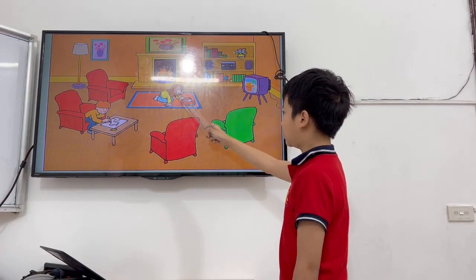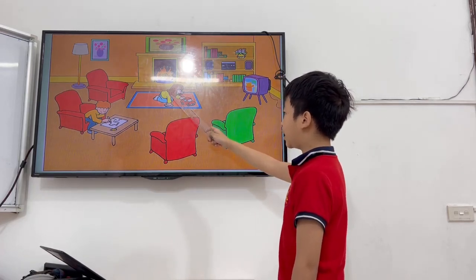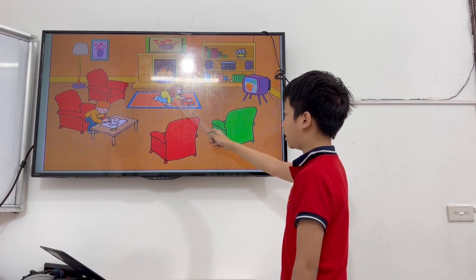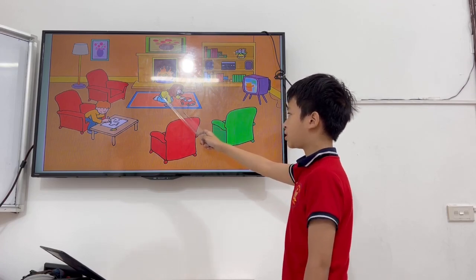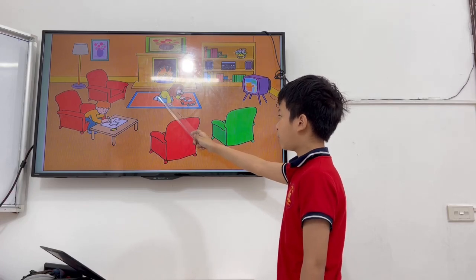There is a girl. She's playing with a toy car. She's wearing a yellow t-shirt, blue skirt, and white socks.